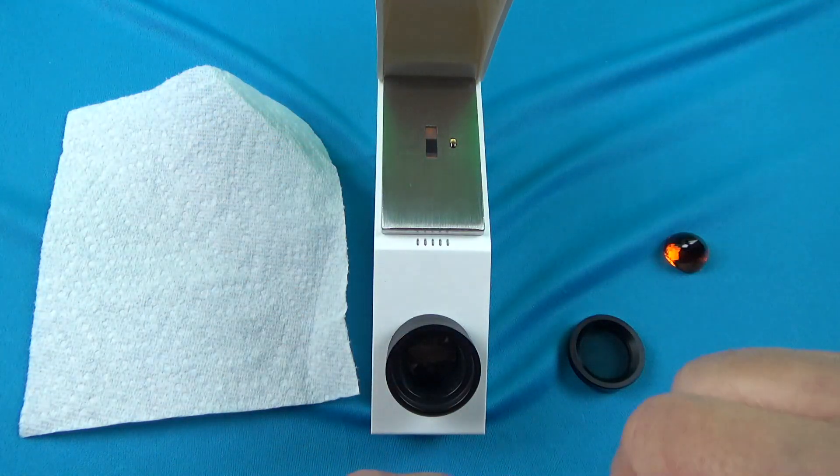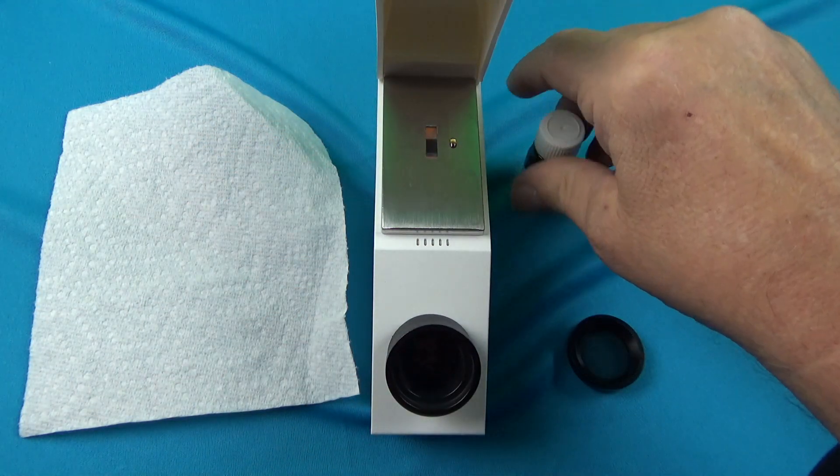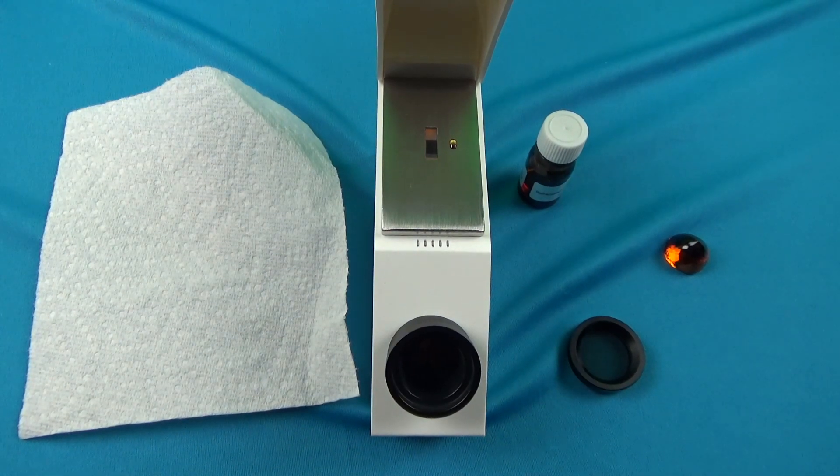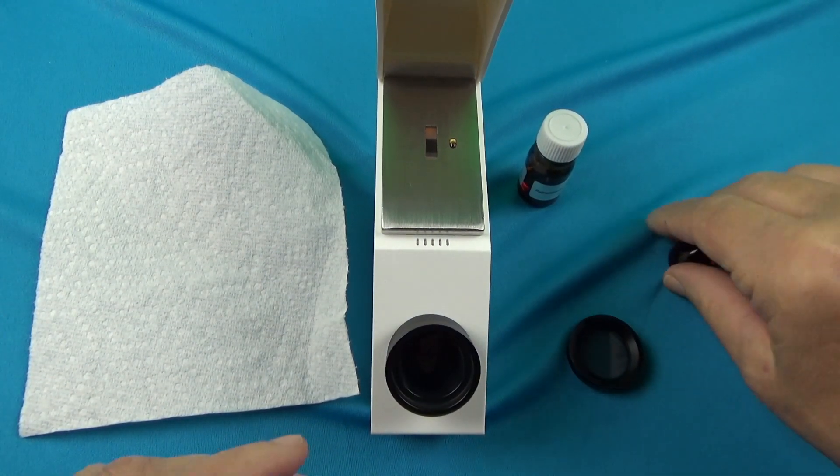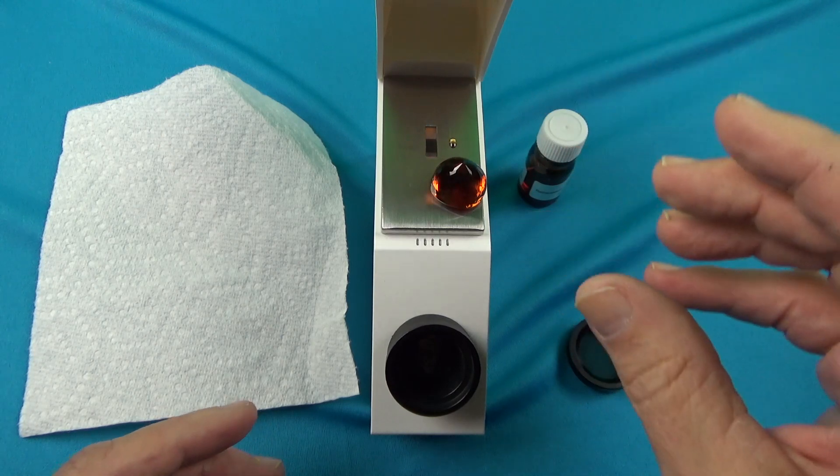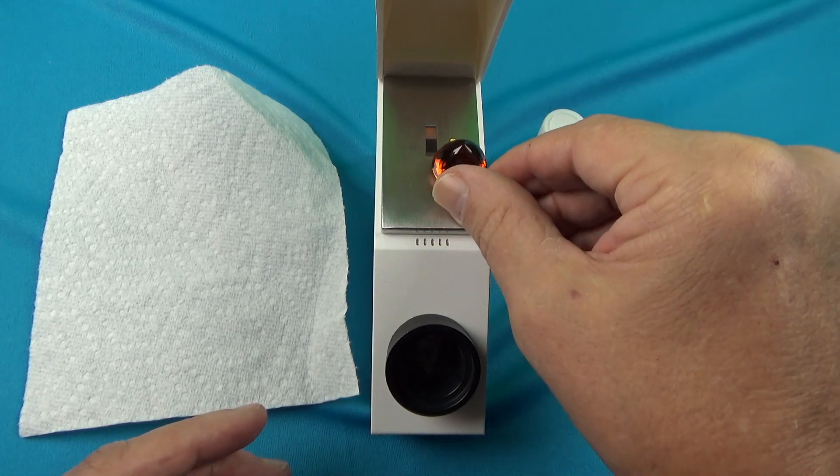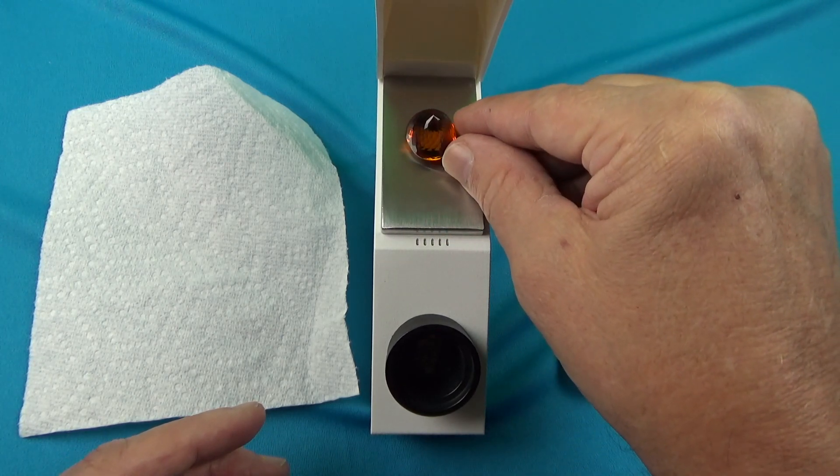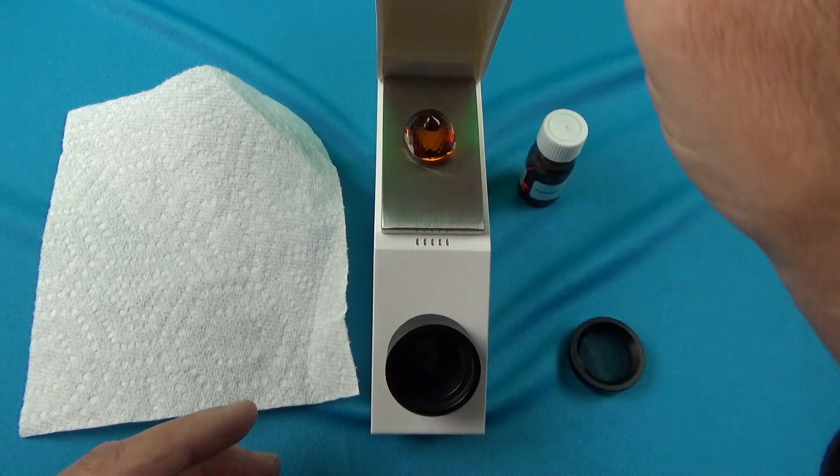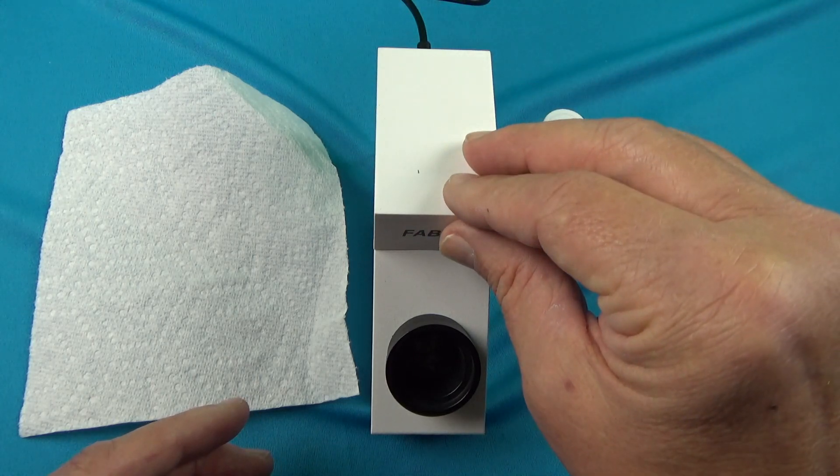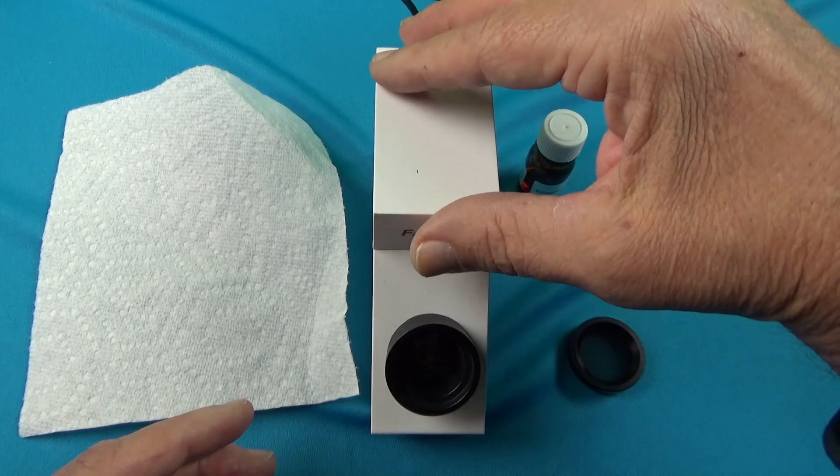Just put a drop on here. You don't want to put a lot. This is something you have to be careful of because you don't want too much, but you've got to have enough to have good optical contact. Slide the stone over onto the CZ hemicylinder. We have a CZ hemicylinder. They're harder and harder to scratch, but they still can be scratched.